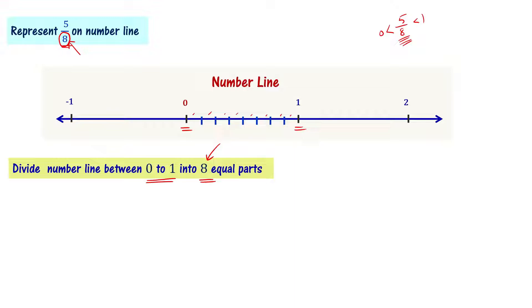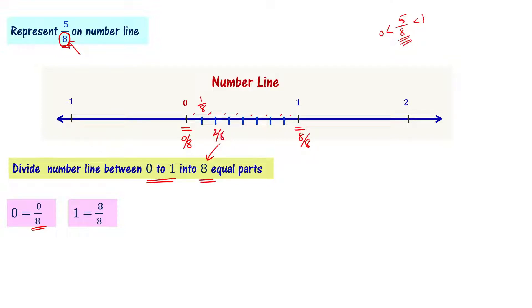Now we can say that 0 is equal to 0/8 and 1 is equal to 8/8. So the divisions are: 0/8, 1/8, 2/8, 3/8, 4/8, and this one is 5/8. This is how we represent rational numbers on the number line.